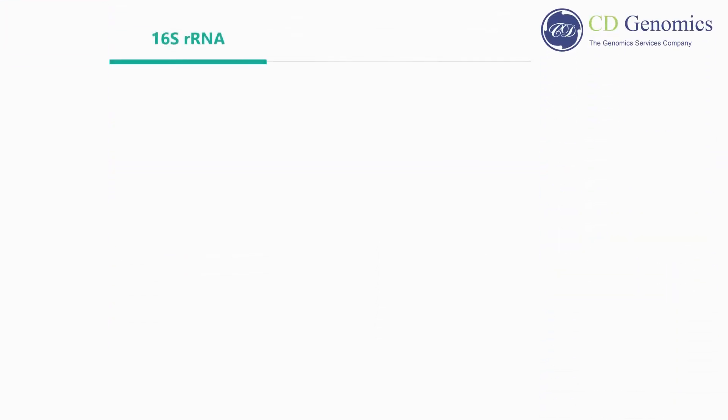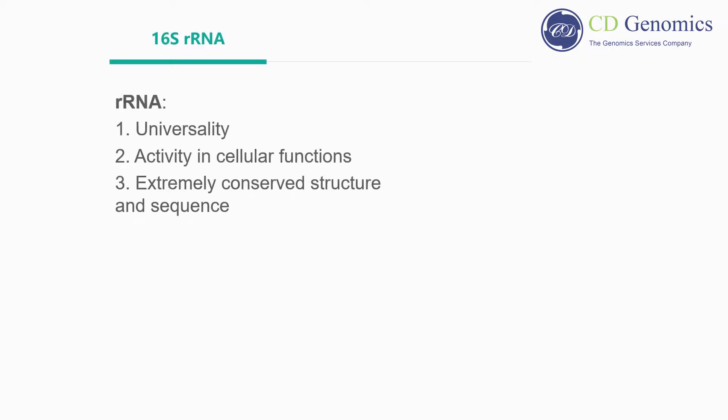First, let's begin with what the 16s ribosomal RNA is. Woos and his colleagues first described bacterial RNA genes as molecular clocks, due to their uncommon features such as universality, activity in cellular functions, and extremely conserved structure and nucleotide sequence.